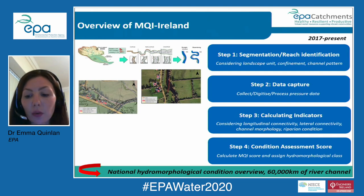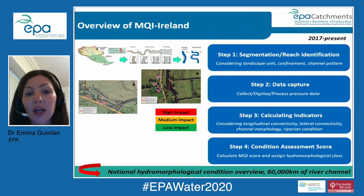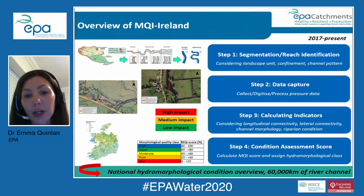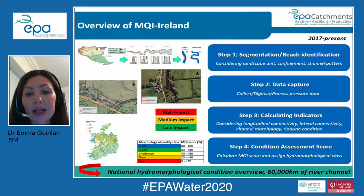With that data we generate indicators considering longitudinal connectivity, lateral connectivity, channel morphology, and riparian vegetation condition. Those indicators are then combined to get an overall condition assessment score and hydromorphological class.